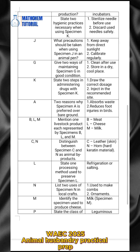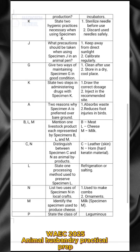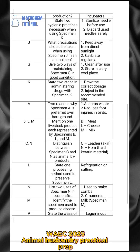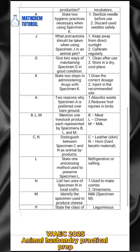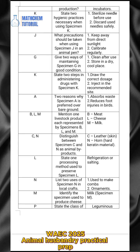For specimen K, state two steps in administering drugs with it. Number one: draw the correct dosage. Number two: inject at the recommended site. For specimen A again, state two reasons why specimen A is preferred over bare ground.